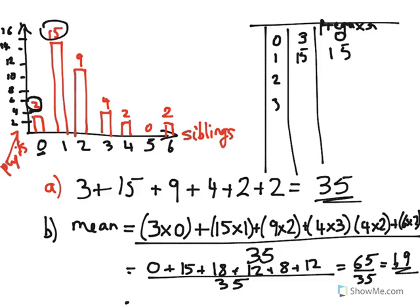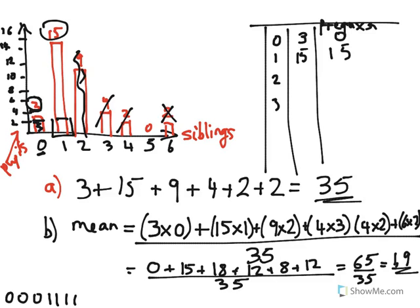We could list out all values — three zeros, fifteen ones, etc. — but that takes forever. Instead, I go from the extremes: cancel the two sixes against two of my zeros, leaving one zero. Then fifteen ones and one left over makes sixteen. Going back sixteen places: two back, then four more gives six, and nine gives fifteen. I had sixteen on the left and only fifteen on the right, so the middle number must be one.